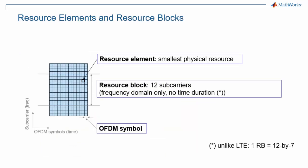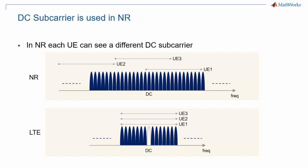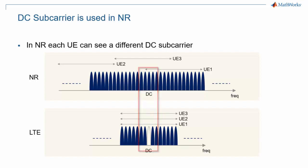The definition of a resource element in 5G NR is the same as for LTE. It is the smallest time-by-frequency unit, which is one subcarrier and one OFDM symbol. On the other hand, a resource block is defined as a group of 12 subcarriers with no associated time duration. You may remember that in LTE, a resource block was defined as 12 subcarriers by 7 OFDM symbols. Note that the DC subcarrier is modulated in 5G NR, whereas it was kept unmodulated in LTE. The reason is that in 5G NR, bandwidth parts and therefore transmissions need not be centered in the carrier bandwidth, so the zero subcarrier doesn't play any specific role in the 5G NR OFDM grid.